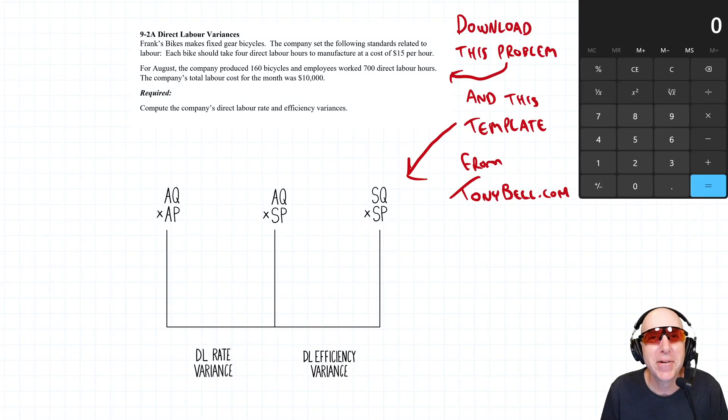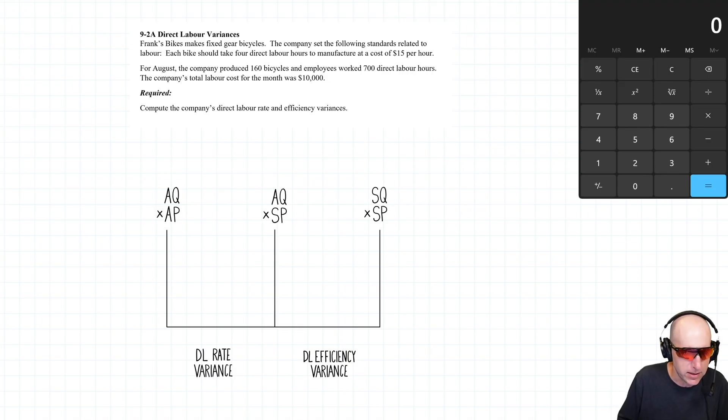Let's jump into problem 9.2, labor variances. As we read through the question, we're on the lookout for actuals and standards because we're comparing actuals to standards and doing analysis based on that. Frank's Bikes makes fixed-gear bicycles.